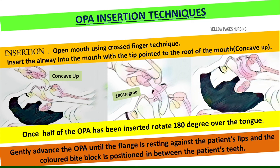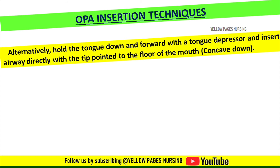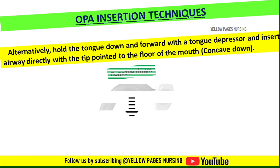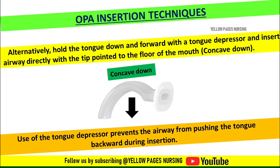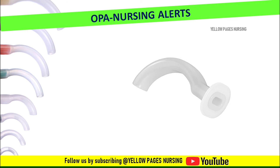Alternatively, there is one more method: hold the tongue down and forward with a tongue depressor and insert the airway directly with the tip pointed to the floor of the mouth — concave down. Use of the tongue depressor prevents the airway from pushing the tongue backward during insertion.